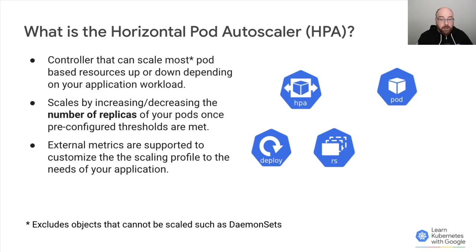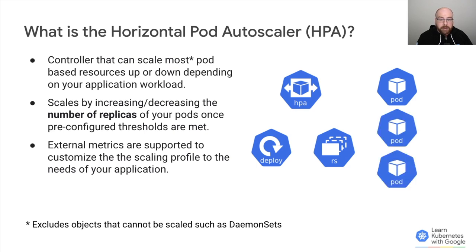The HPA is a controller that can scale most pod-based resources up or down depending on your application workload. It does this by scaling the number of replicas of your pod once certain pre-configured thresholds are met. And for many applications, scaling based on a single metric such as CPU usage will probably be enough to cover your basic application scaling needs. We'll see a small preview of this in an example.